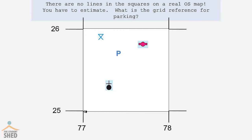And for the second three numbers, 25. Again, P is not in the middle of the grid. It's further up. So I would say 257. Do you agree with me?